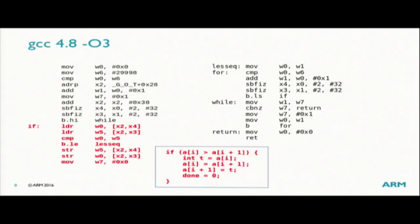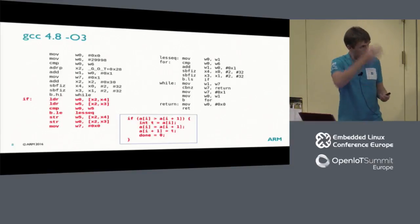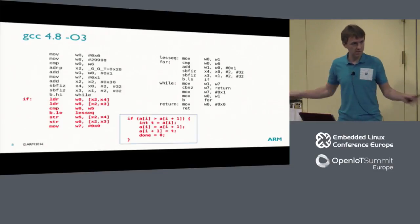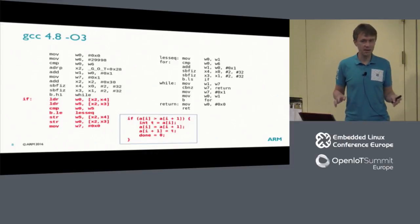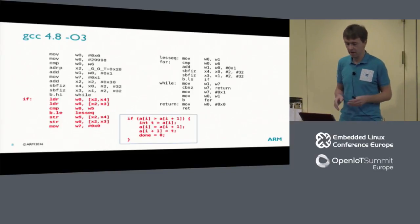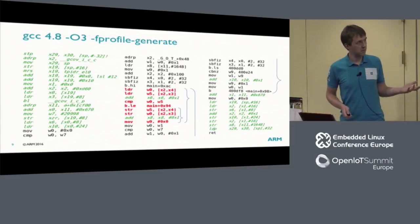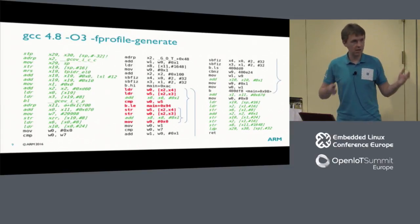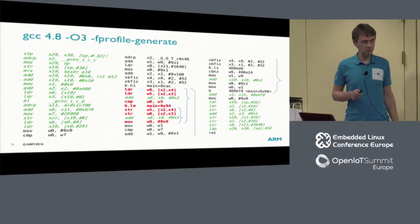What are the expensive operations here? Memory accesses. We don't want to do stores if it's not necessary — if we don't have to swap the elements. That's why we skip it with a branch, and branches themselves are expensive. For the purpose of this experiment, let's believe that branches are expensive, even with good hardware branch prediction units. Therefore, we want to avoid branches and avoid memory operations if possible.